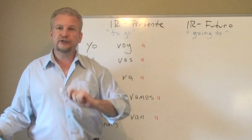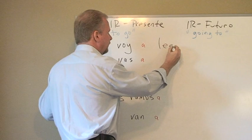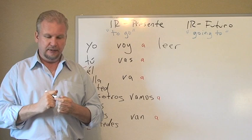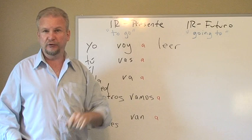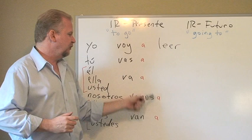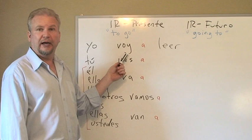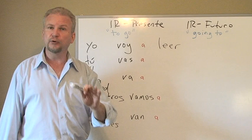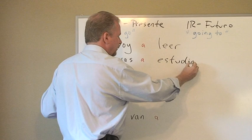Now we're going to write some verbs to change these sentences into the future. Yo voy a leer — I'm going to read. With the second verb, the implication is that this is in the future. We continue using 'a' after the verb IR — 99% of the time you will see 'a' following any form of the verb 'to go.' Tú vas a estudiar — you're going to study.